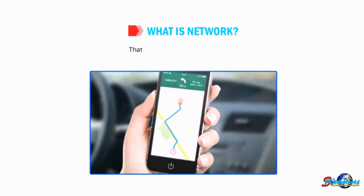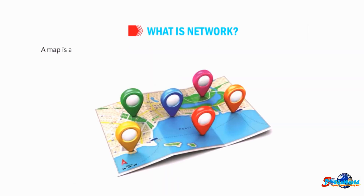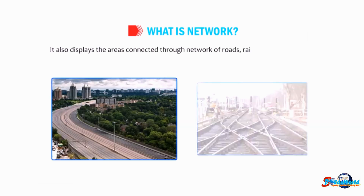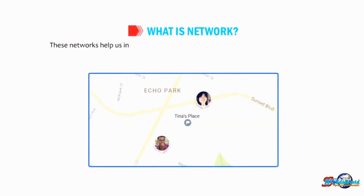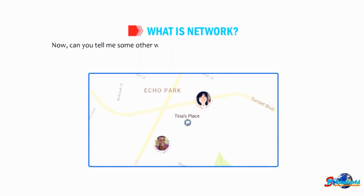That route display is known as a map. A map is a visual representation of different locations of a country displayed on a flat surface. It also displays the areas connected to a network of roads, railway lines, or airways. These networks help us in traveling from one place to another so that we can meet our friends and relatives living at far off places.